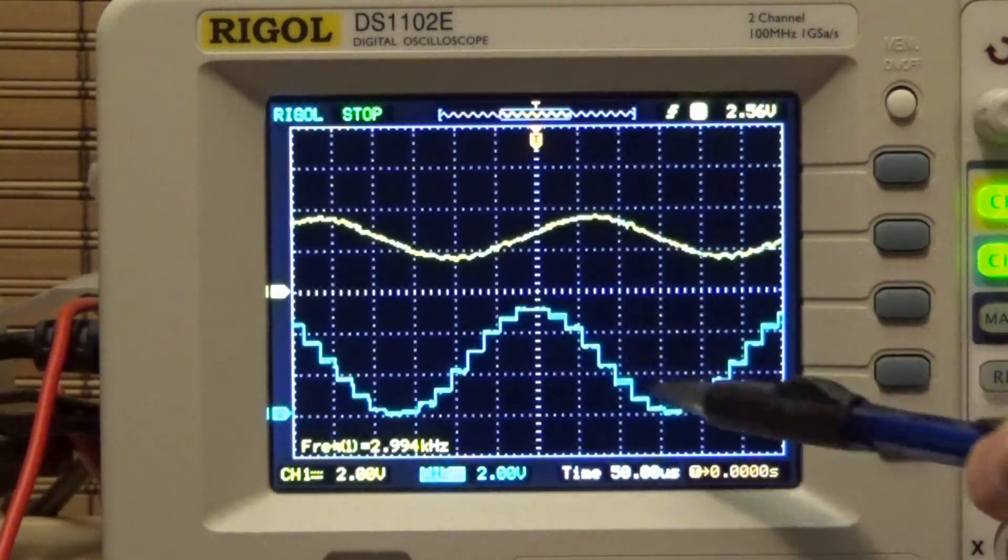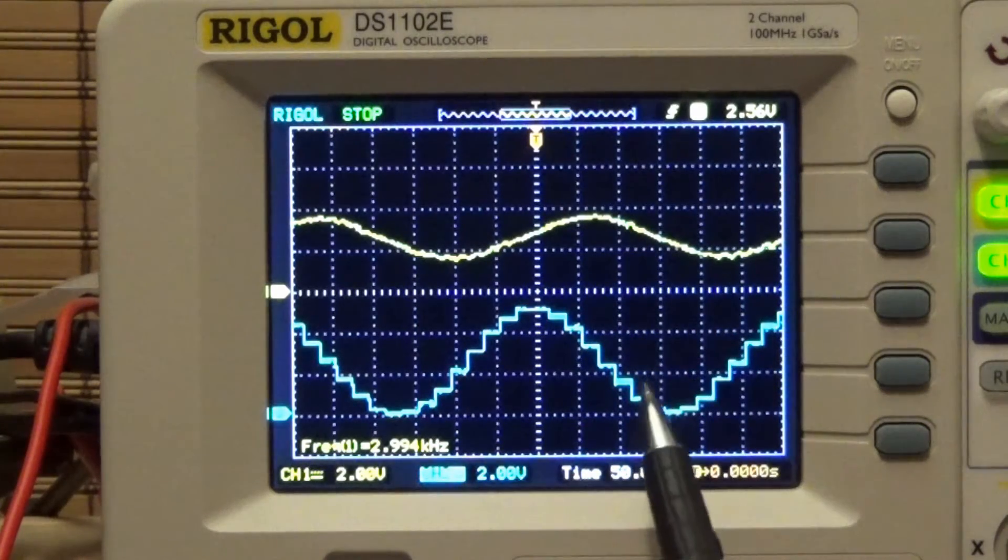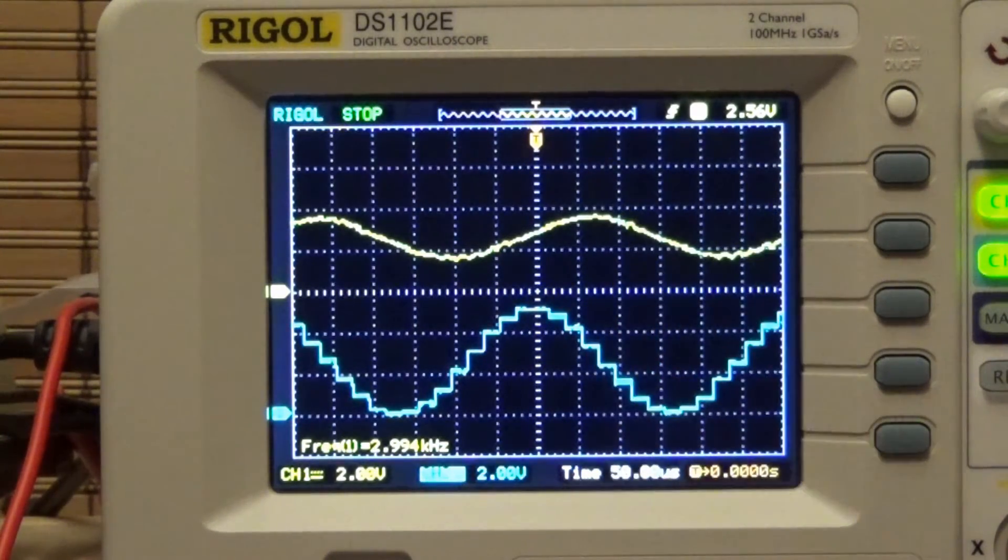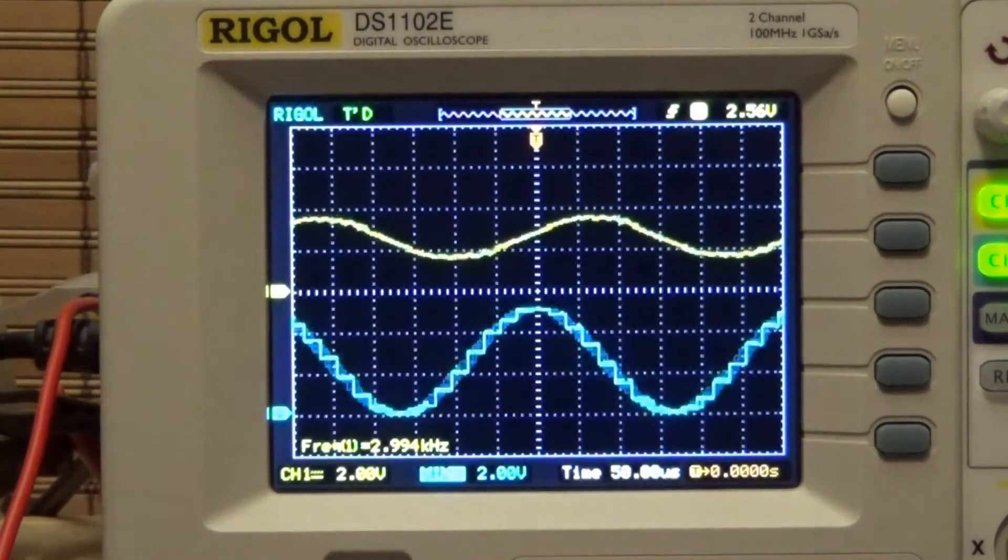And so the direct digital synthesis is just picking numbers out of the sine table and outputting it continuously. And this frequency here between these two rising edges is the 50 kilohertz, it's the update rate of the direct digital synthesis.